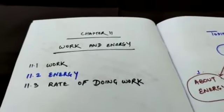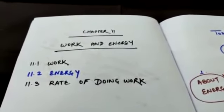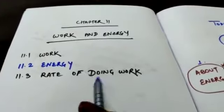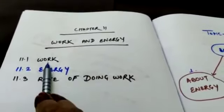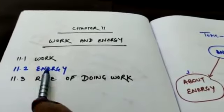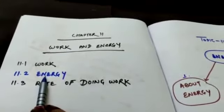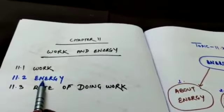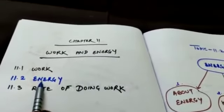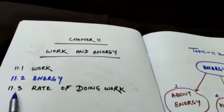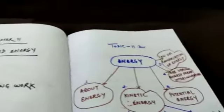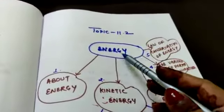Good morning, 9th class. Today we are dealing with chapter number 11. The name of the chapter is work and energy. In this chapter, we have total three topics. 11.1, we have already completed work. 11.2, energy. Some of the sections up to kinetic energy we have completed, but rest of the sections are left. So today we are going to complete 11.2, energy, as well as 11.3, rate of doing work. So here is our topic 11.2, energy.